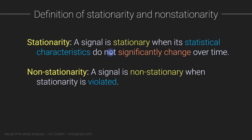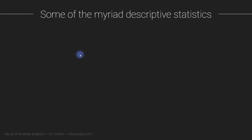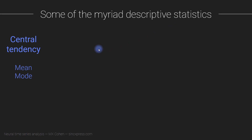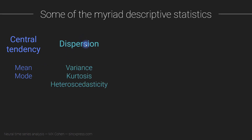This definition is intentionally left ambiguous because in our datasets we generally don't formally test for stationarity, so I'd like this to remain an intuitive concept. Let me give some examples. First, here are some of the many descriptive statistics you can use to describe a signal — this is a non-exhaustive list. We have statistics about central tendency: mean, mode, median, and so on. We have statistics about dispersion: variance, kurtosis, and heteroscedasticity — which is one of the most fun words to say in statistics.